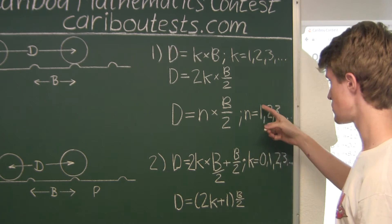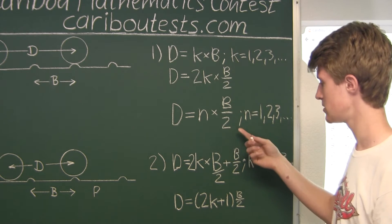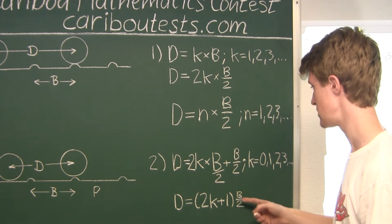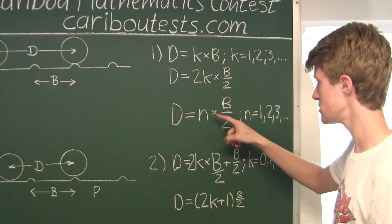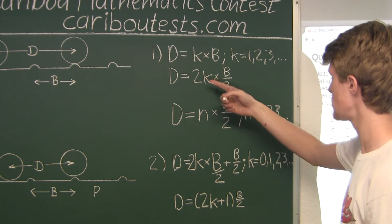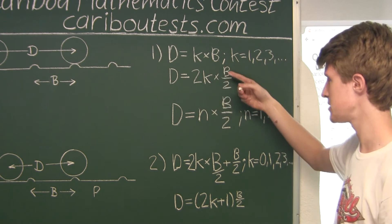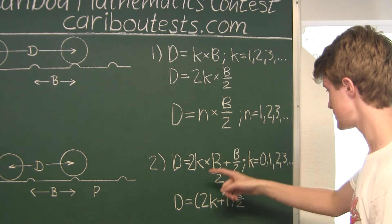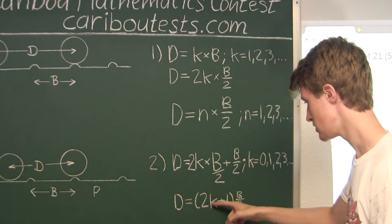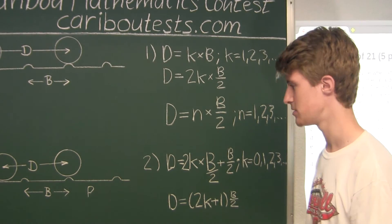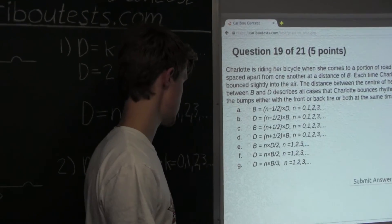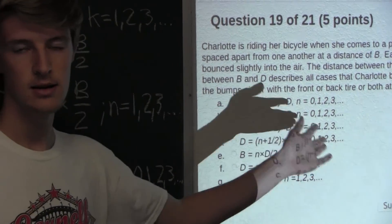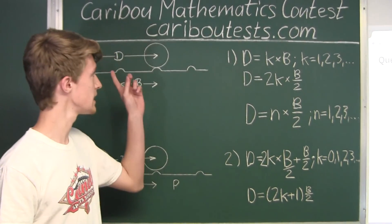Let's just prove this. If N equals 1, then D equals 1 times B over 2, so D equals B over 2 — that corresponds to K equals 0 in the second formula: (2×0 + 1) times B over 2. If N equals 2, then 2 times B over 2 gives just B, which corresponds to K equals 1 in the first formula. And for N equals 3, we get 3 times B over 2, which corresponds to K equals 1 in the second formula: (2×1 + 1) times B over 2. So looking at the options, the correct answer is option F: D equals N times B over 2, where N is any positive integer — 1, 2, 3, and so on. If you'd like to learn more about this contest, please feel free to visit our website at cariboutests.com.